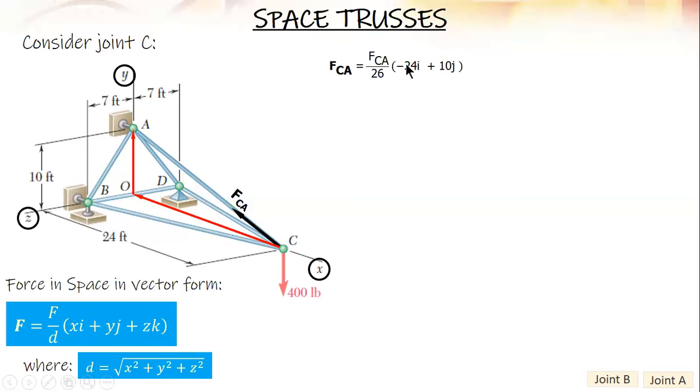So FCA equals negative 24I plus 10J, divided by the square root of 24 squared plus 10 squared, which is 26, times FCA. And then simplify: negative 12/13 FCA times I plus 5/13 FCA times J. Proceed with the other forces.